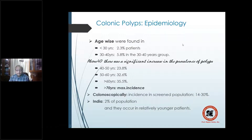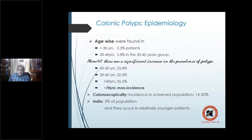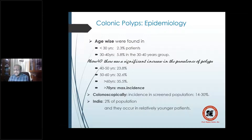Epidemiologically, above 40 years there is a significant increase in prevalent polyps. Maximum incidence is in the over-70 age group. Less than 30 years, there is a very low incidence unless it's part of an inherited syndrome. Sporadic polyps are found maximally in those more than 70 years.